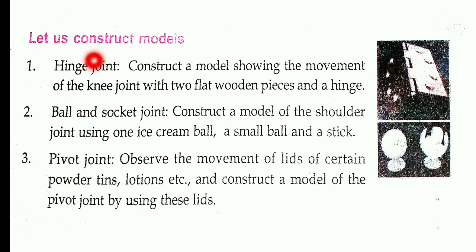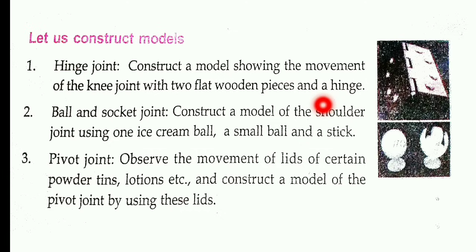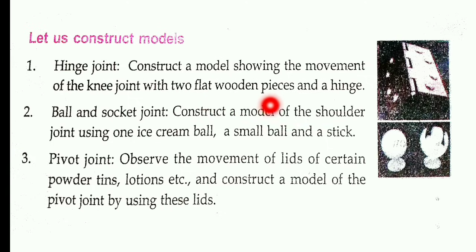Let us construct a model showing the movement of the knee joint with two flat wooden pieces and hinges. This is the ball and socket joint.